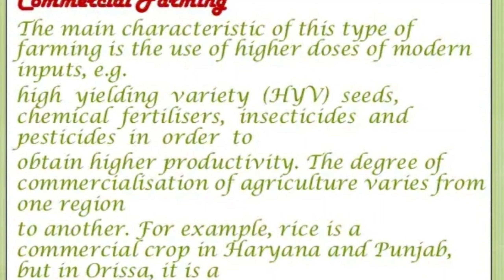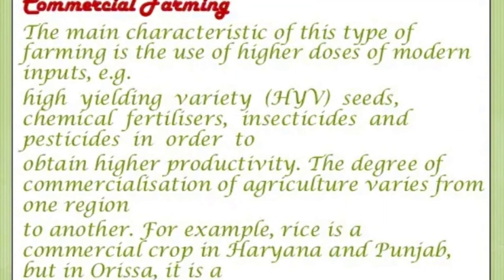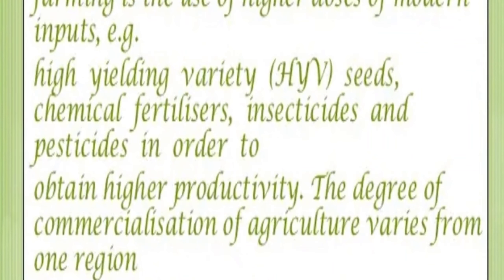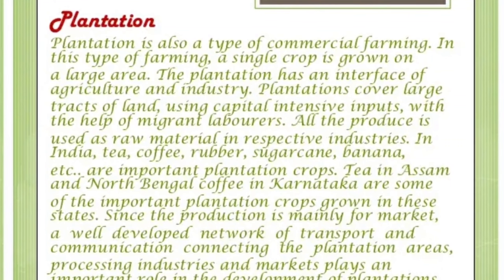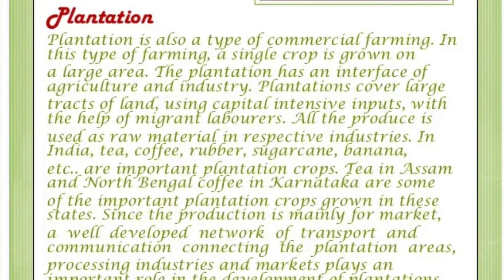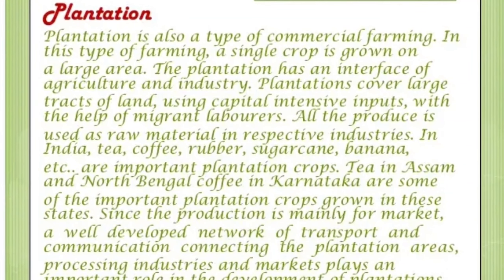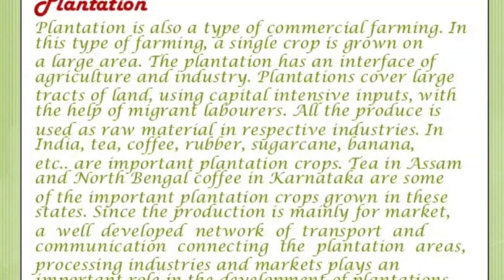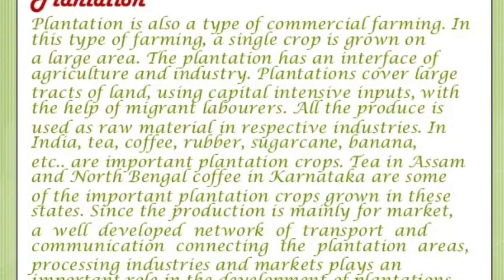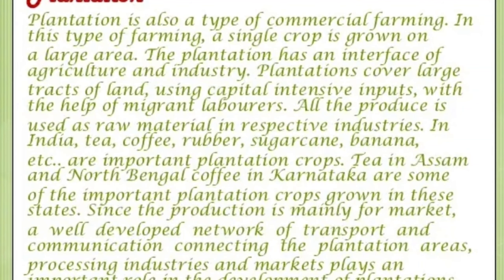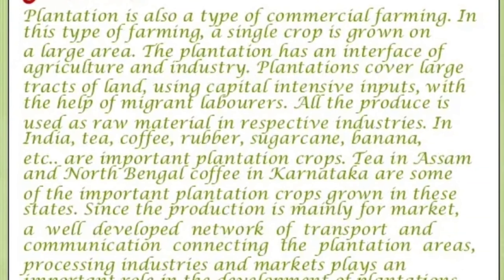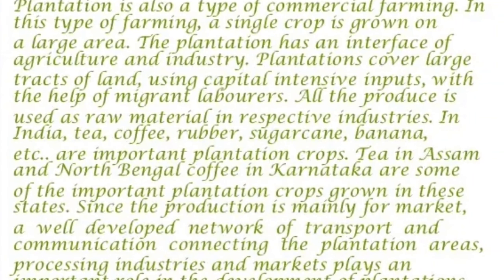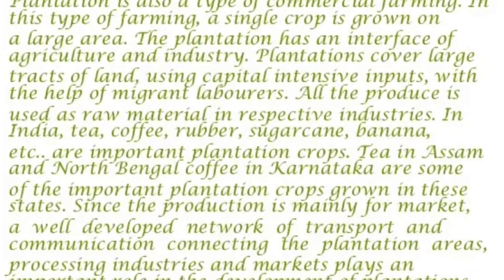The main characteristic of commercial farming is the use of higher doses of modern inputs — quality seeds and chemical fertilizers. In plantation farming we grow coffee, tea, rubber, sugarcane, and banana. During the British period, they used to grow opium, tobacco, and gave importance to jute. Cash crops like cotton, from which more income could be earned, were given more attention.